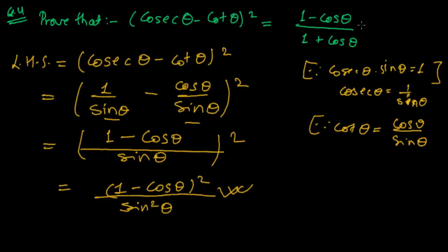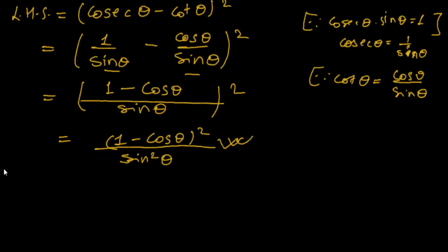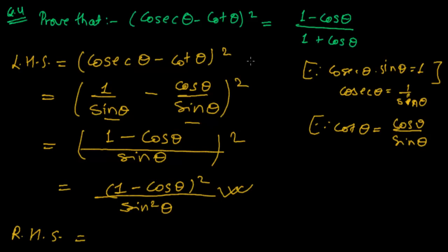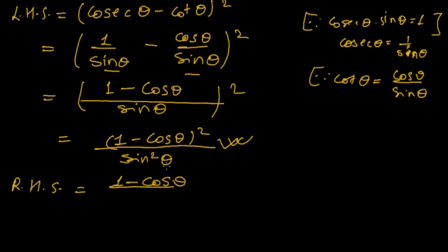Now let's solve the right hand side. In some problems, we only need to solve the left hand side and we automatically get the right hand side. But in this problem, we are solving both the right hand side and left hand side individually. So the right hand side is 1 minus cosine theta upon 1 plus cosine theta.